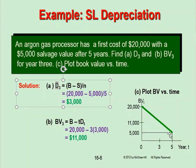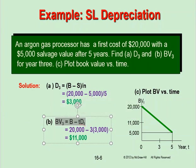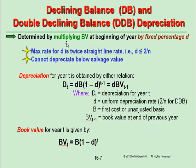In straight-line depreciation, d is like the slope of a straight line, and we said it is constant whether it's d3, d4, or d5 — always the same amount — because it is independent of t. We had the formula: BV₃ = B − t·d.